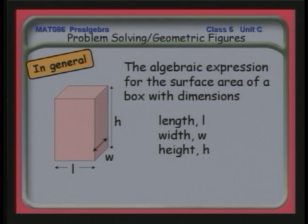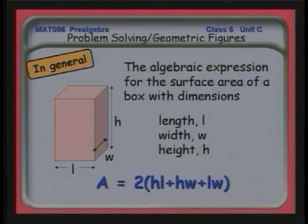The algebraic expression for the surface area of a box with dimensions L (length), W (width), and H (height) — let's develop the formula abstractly. We see it's a polynomial: the area is 2 times (height times length) for one pair of sides, plus 2 times (height times width) for the sides on the right, plus 2 times (length times width) for the top and bottom.